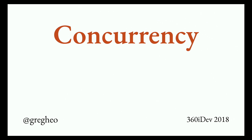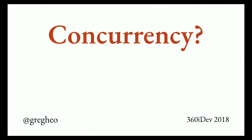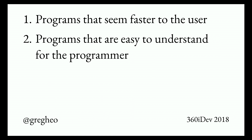So what are we going to talk about today? We're going to talk about concurrency, of course — that's our high-level theme. But what does concurrency mean and how does it work? If we ask ourselves why we want to talk about concurrency, I think everything we're learning this week at the conference is in service of becoming better programmers and writing better code. I have two high-level goals: programs that seem faster to the user, and programs that are easy to understand for the programmer. There's a little sleight of hand here — programs only need to seem faster to the user, not actually be faster.